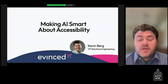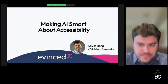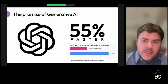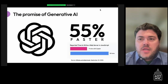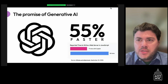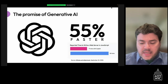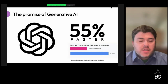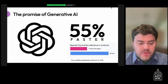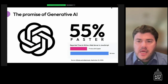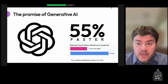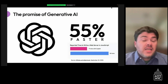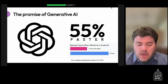AI is clearly a tool that's going to help us in ways we've already measured. GitHub did a controlled study of the impact that using an AI tool like GitHub Copilot can have on both the productivity and the satisfaction of developers.